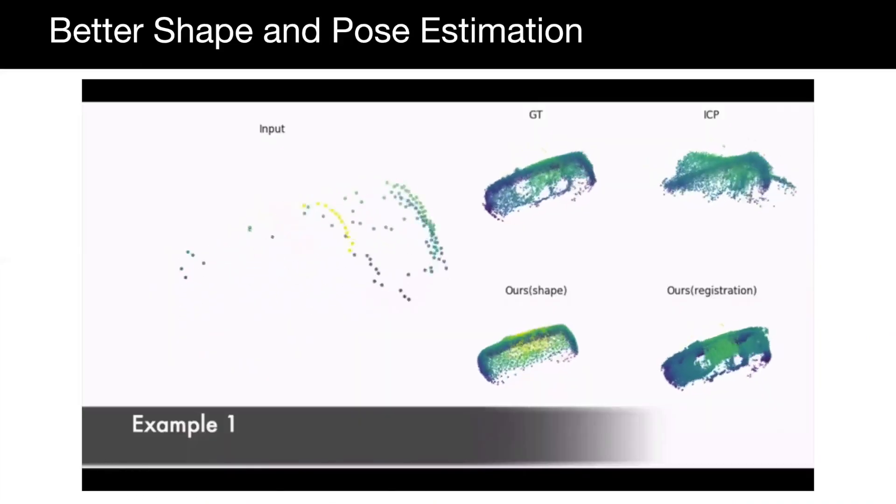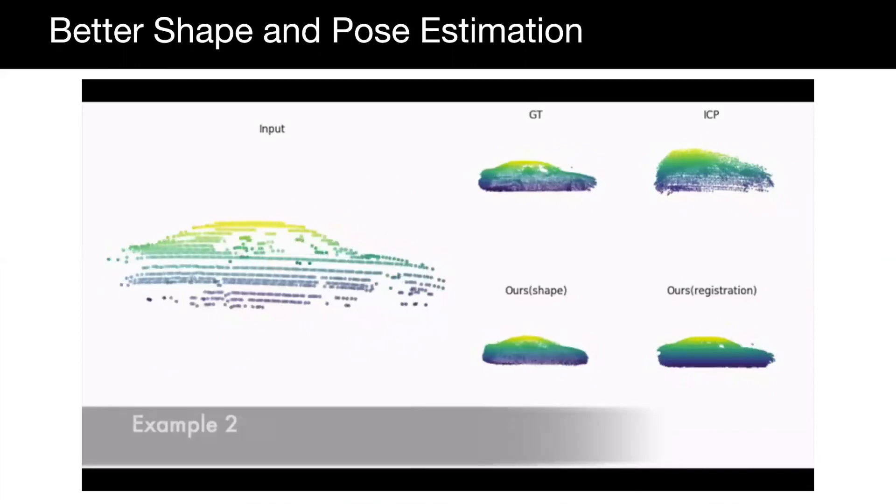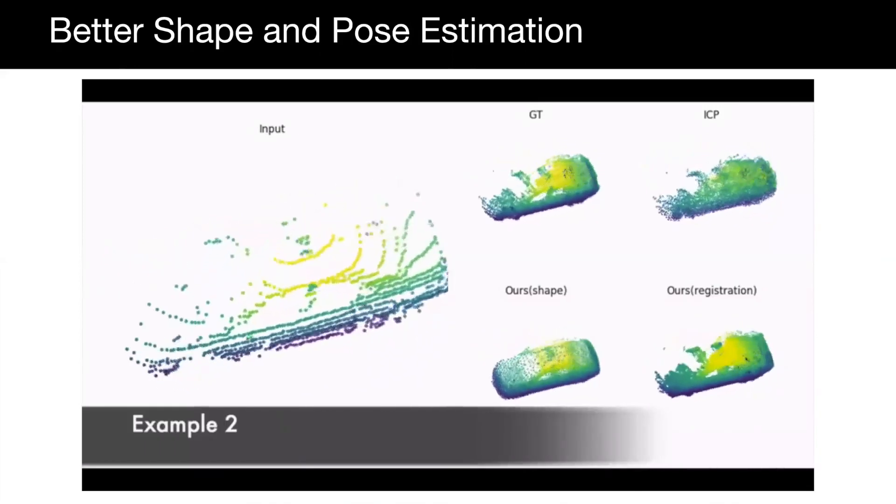Without ground-truth shape or pose, our method learns to complete 3D shapes on real-world in-the-wild partial point clouds.